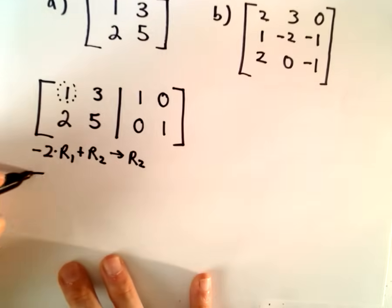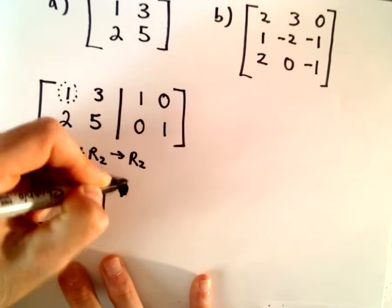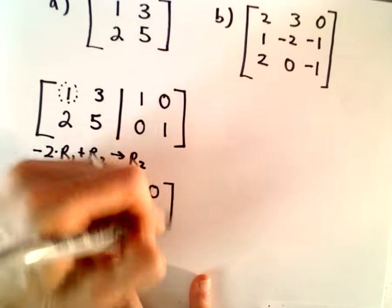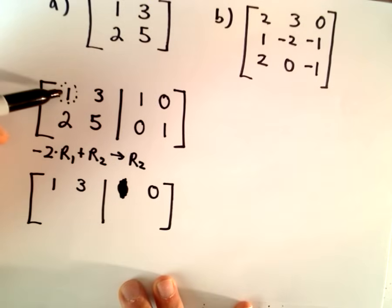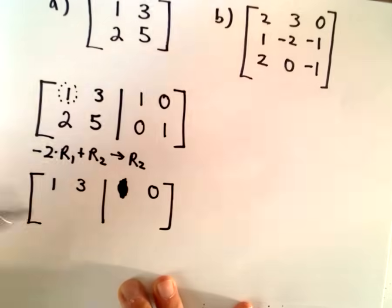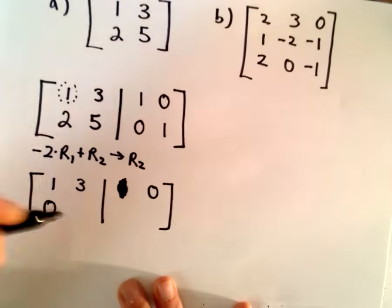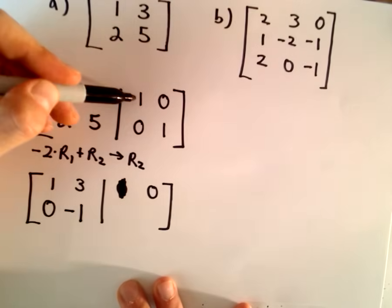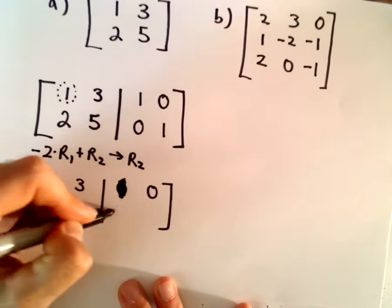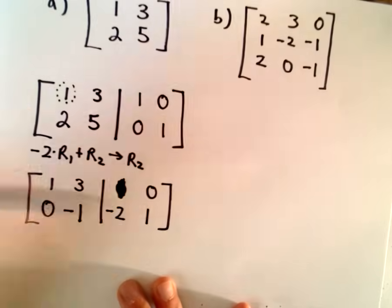So, if we do that, okay, the first row, we just leave it alone. Leave it alone. I almost messed it up already. So, there's my bad-looking 1 there. So, if we do negative 2 times 1, that's negative 2. Negative 2 plus 2 will be 0. Negative 2 times 3 will be negative 6. Negative 6 plus 5 will be negative 1. Negative 2 times 1 is negative 2. Plus 0 will be negative 2. And then negative 2 times 0 plus 1 will just be positive 1.